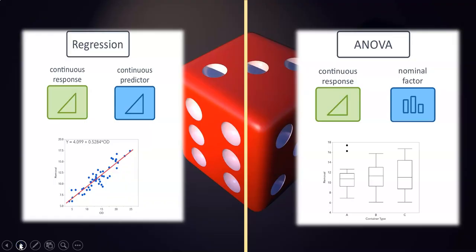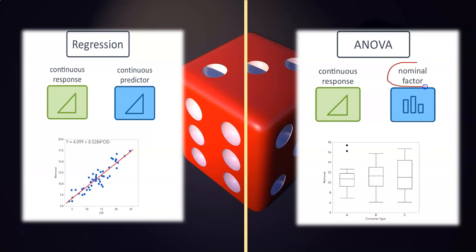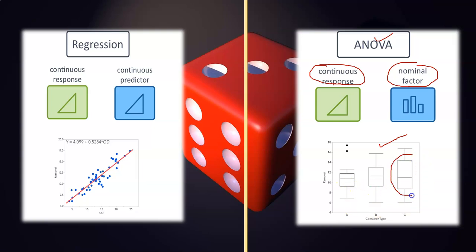Before going to regression analysis, I am going to highlight the difference between regression and ANOVA. We already know ANOVA — for doing ANOVA we need two variables: one independent variable, which we may call a nominal factor. If you have more than two or three classifications in the categorical independent variable, we can use ANOVA. The condition to apply ANOVA: we need one independent variable with a minimum of three categories, and the dependent variable should be continuous. For checking the significant difference among the three groups, diagrammatically we use a box plot graph.